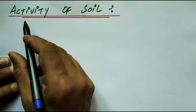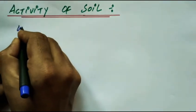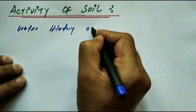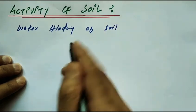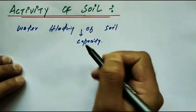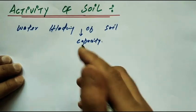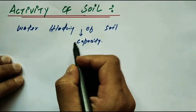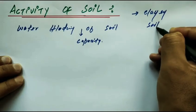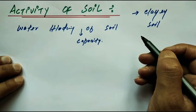First of all, let us discuss what exactly activity of soil means. Activity of soil means the water holding capacity of soil — how much soil is able to hold water inside its pores. Activity is only defined for clay soil; it is not defined for silt, sand, or gravel.